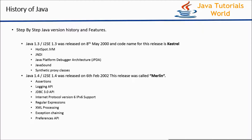The next release of Java is Java 1.3, released on 8th May 2000. This release includes features like Hotspot JVM, JNDI, Java Platform Debugger, Java Sound API, and Synthetic Proxy Classes.